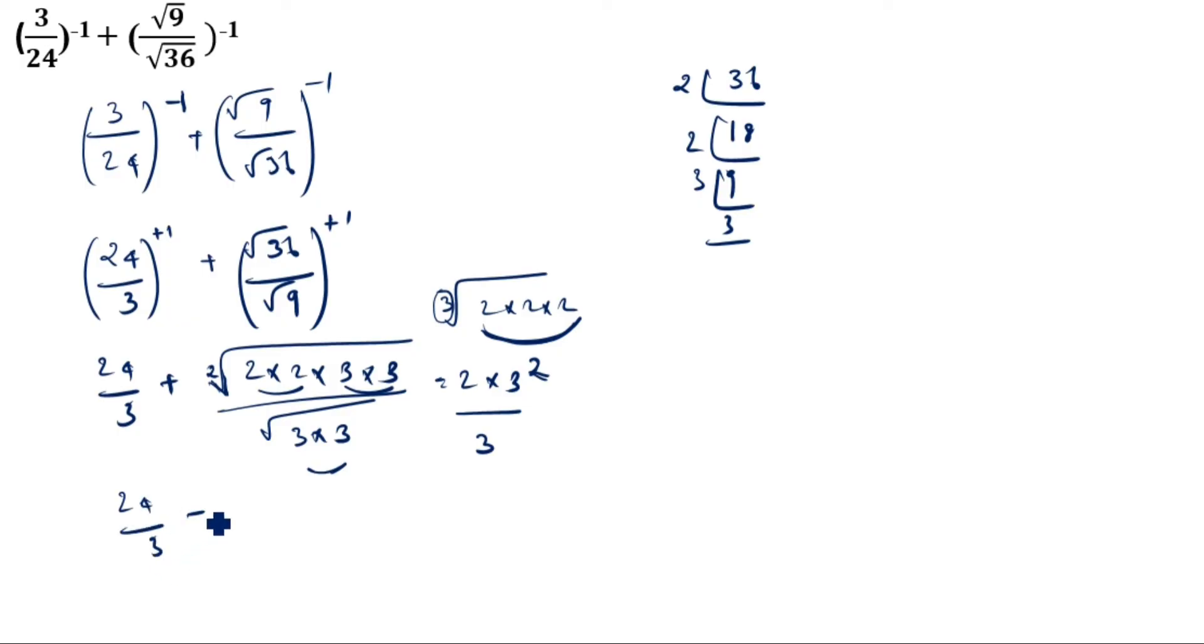Now 24/3 plus 6/3. 3 is common, so you take the LCM which is 3 only: 24 plus 6 equals 30, 30/3.